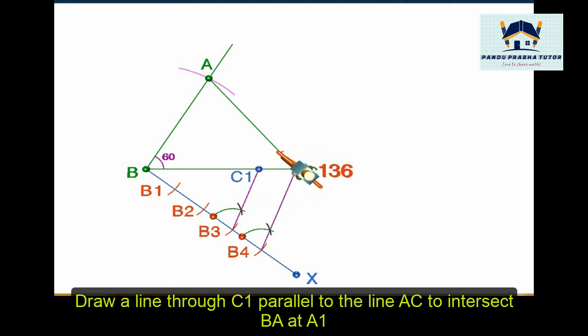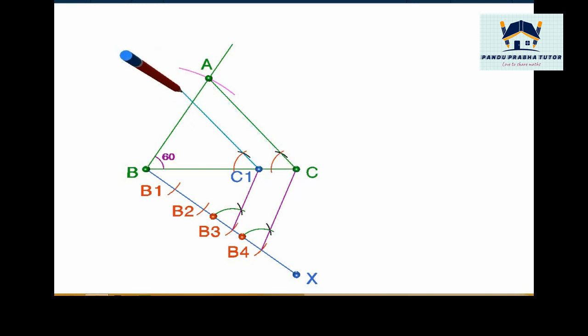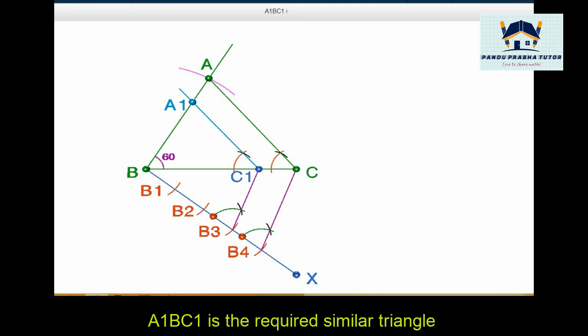Now again we have to draw parallel to AC from C1. Follow the steps. With the same radius, draw two arcs, one from C dash. Now take the distance of the arc, cut another arc. Now join the line which cuts AB line at A dash. Mark it as A dash.